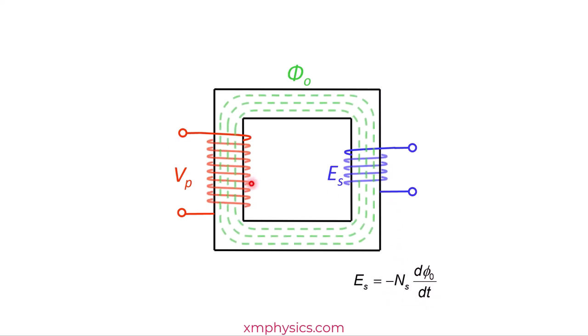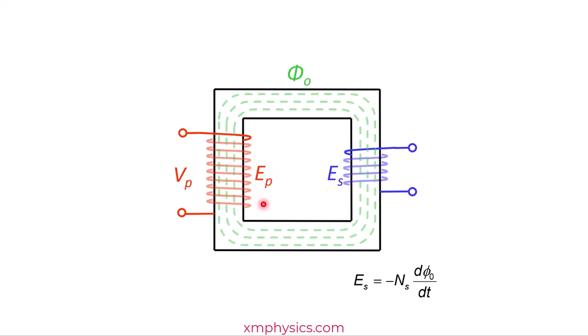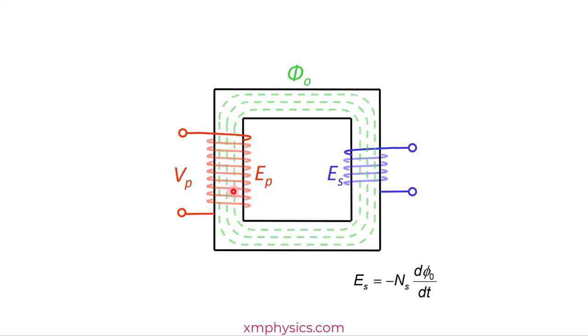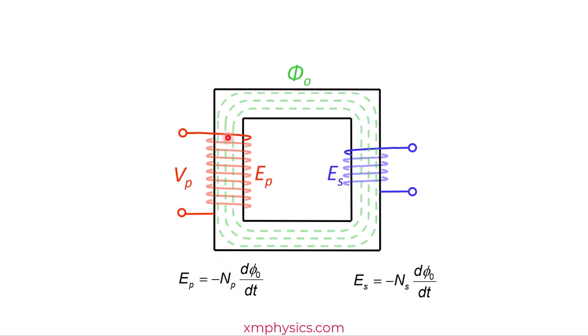Now look at the primary coil. Does it experience a changing magnetic flux linkage? It does, right? So what does Faraday's law say? There's going to be an induced EMF denoted by Ep across the primary coil itself. Then some students will say, isn't this magnetic flux produced by primary coil itself? So the primary coil is producing a magnetic flux that induces an EMF in itself? Wow, you're so right. Yeah, it's called self-induction. But self-induction is not in the A-level syllabus. So all you're required to do is to say, according to Faraday's law, there's going to be an induced EMF in the primary coil that can be written as Np d phi dt. So Np is the number of turns in the primary coil.